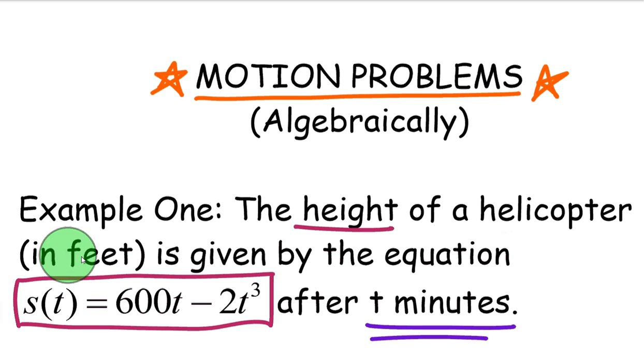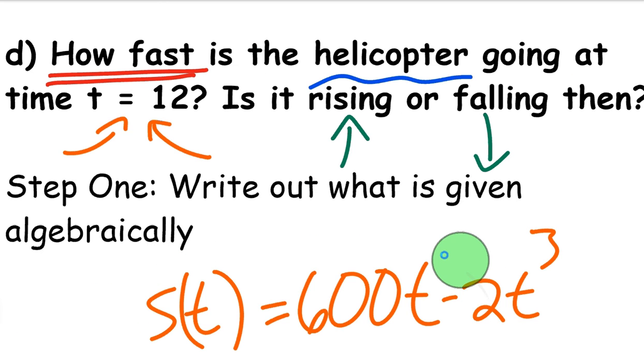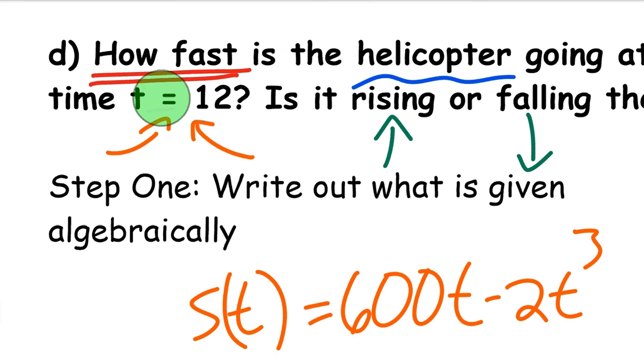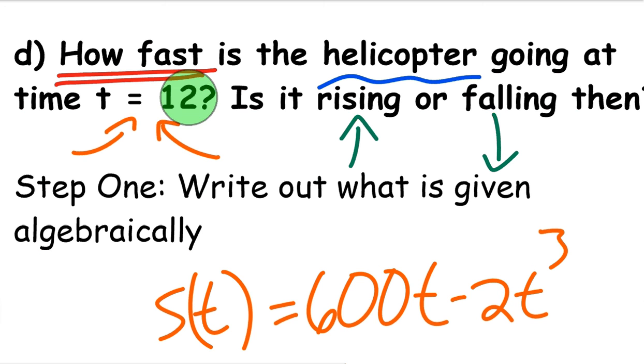The height of a helicopter in feet is given by the following equation: S(t), which denotes position, equals 600t minus 2t cubed after t minutes. The question we want to ask is how fast is the helicopter going at exactly time t equals 12? Is it rising or falling at that time? Before we've had some intervals, now we're talking about a specific point in time. We want to figure out how fast it's going and is it rising or falling at that time.